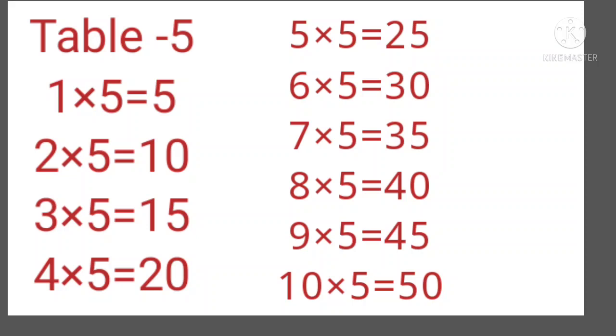5 is added to every number. In this table, 1 × 5 is 5, 2 5's are 10, 3 5's are 15, 4 5's are 20, 5 5's are 25.